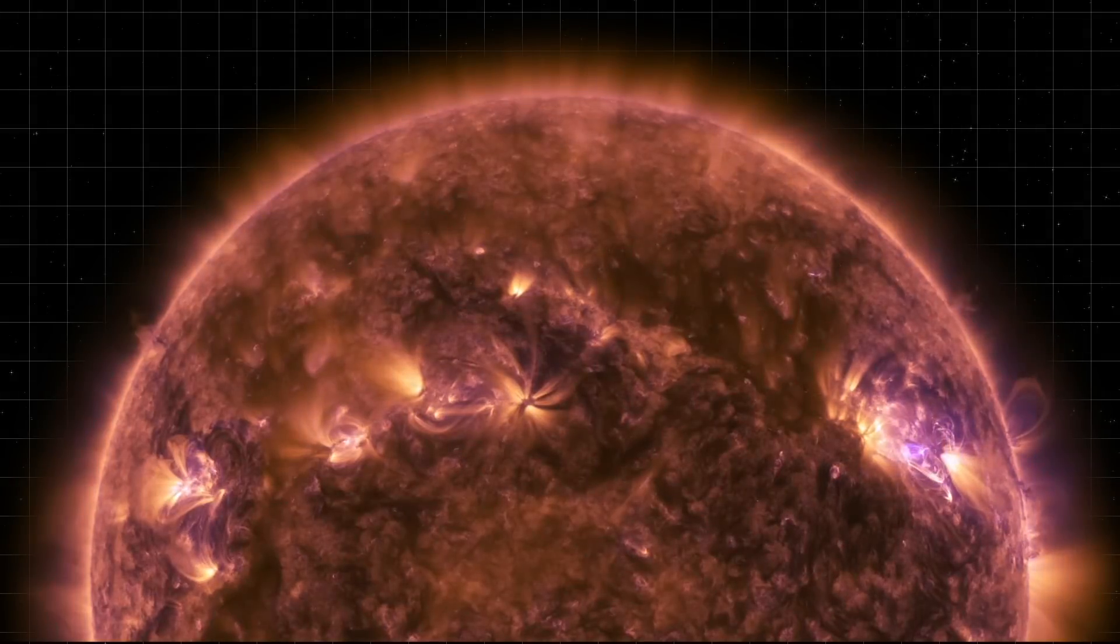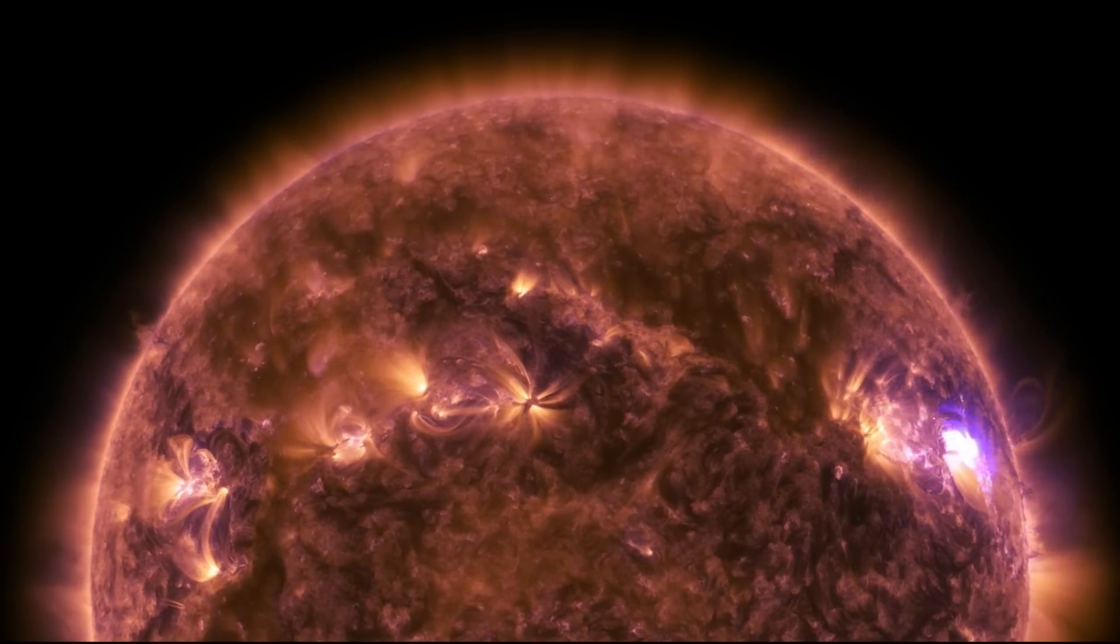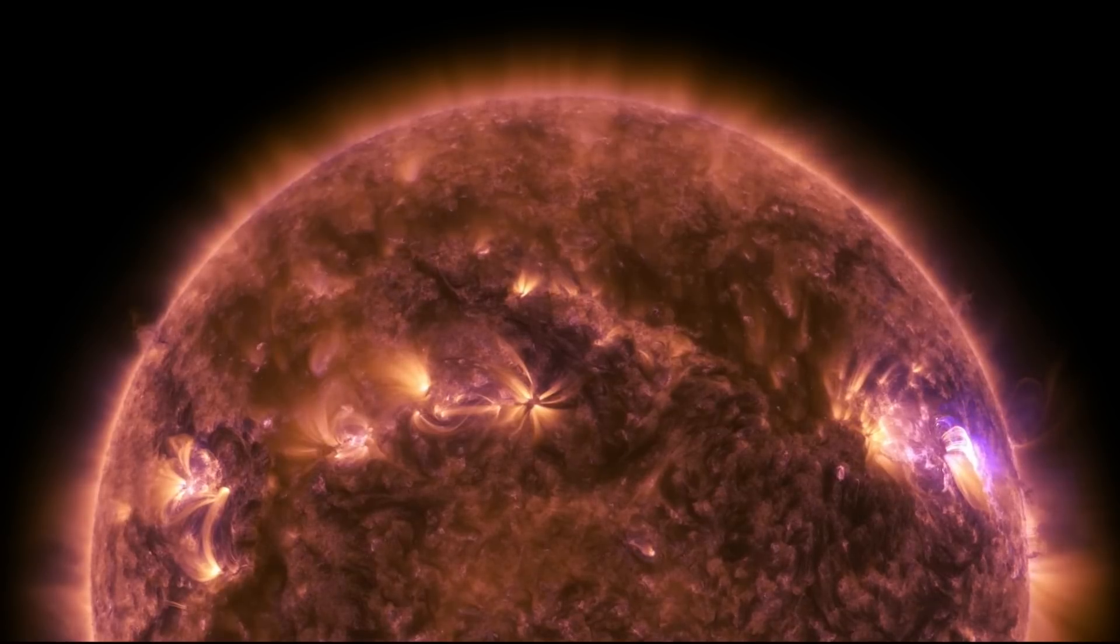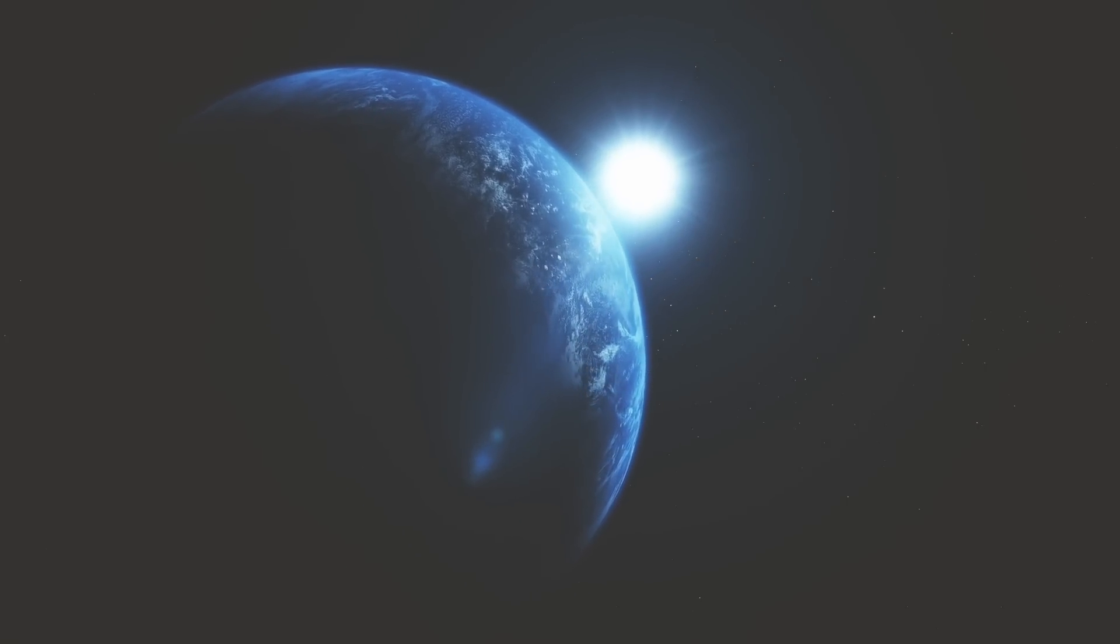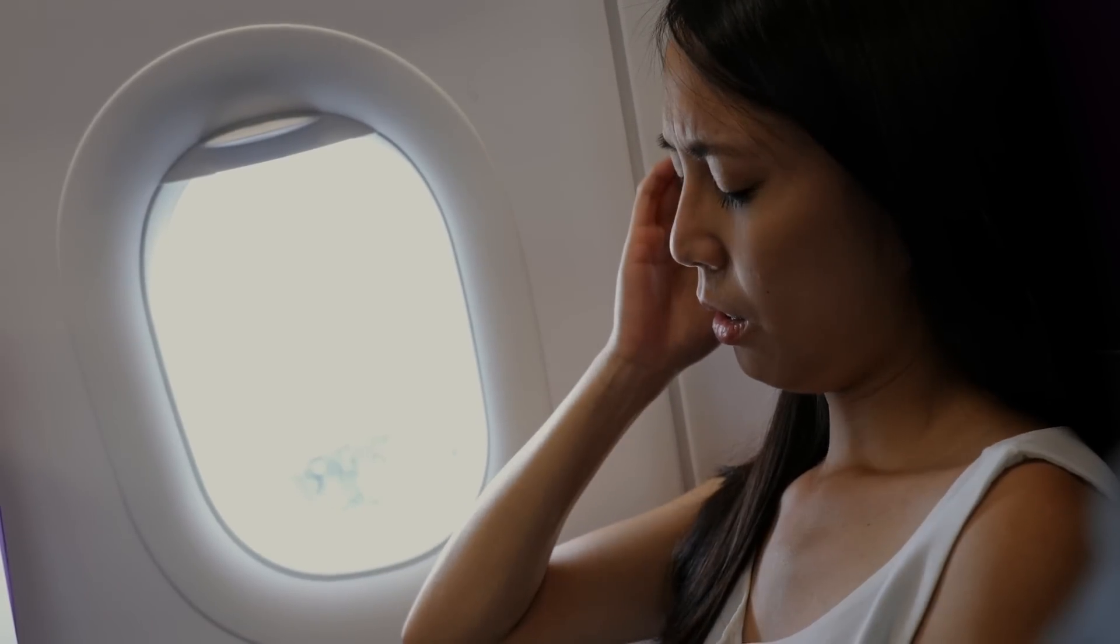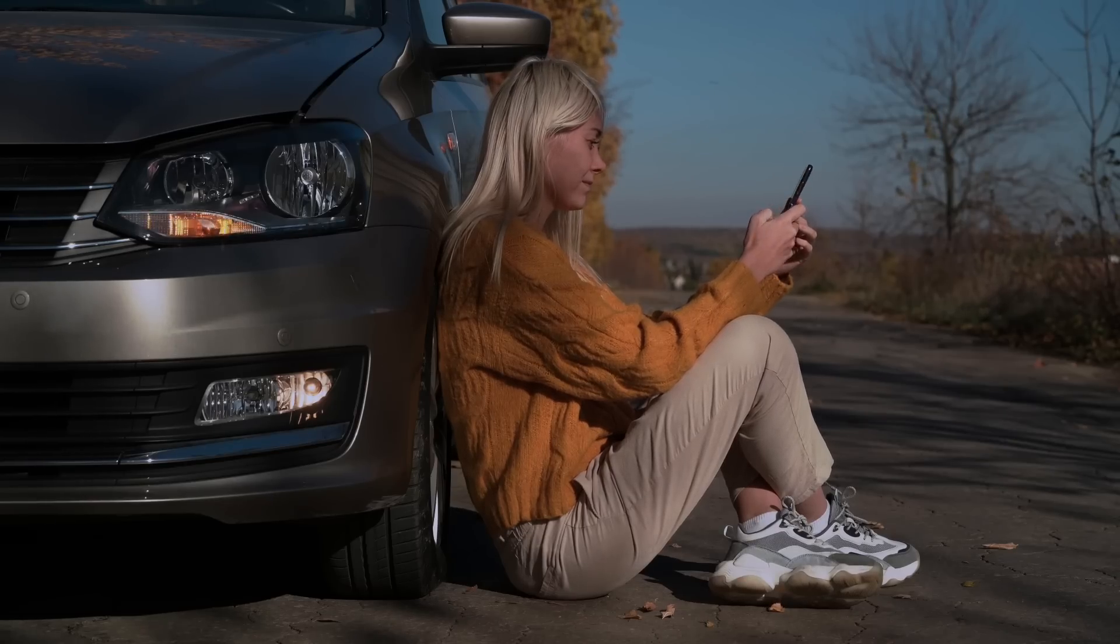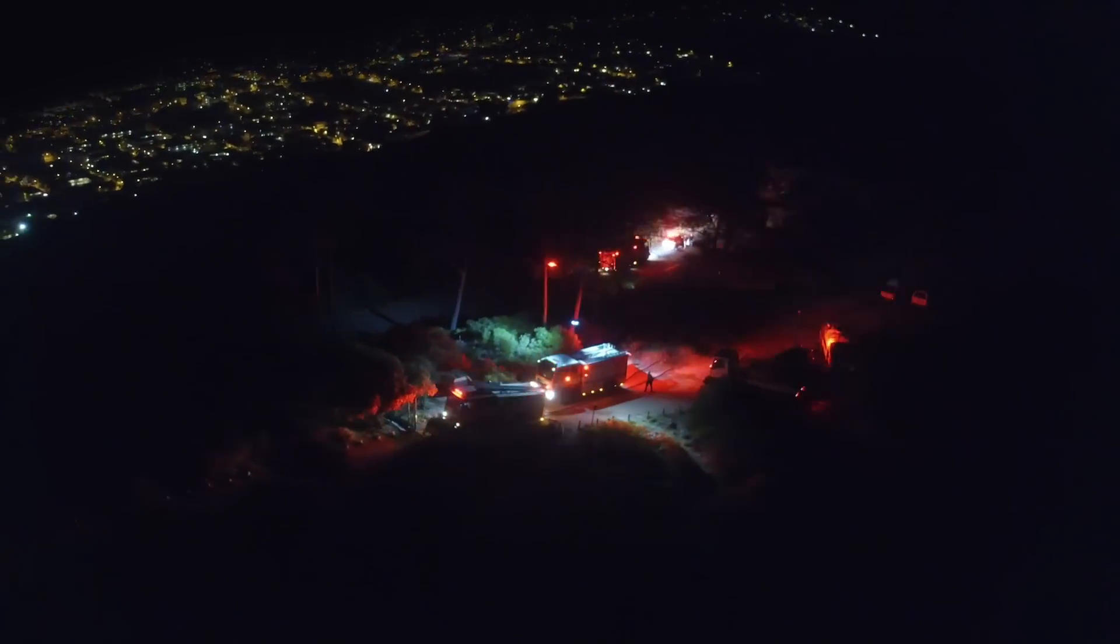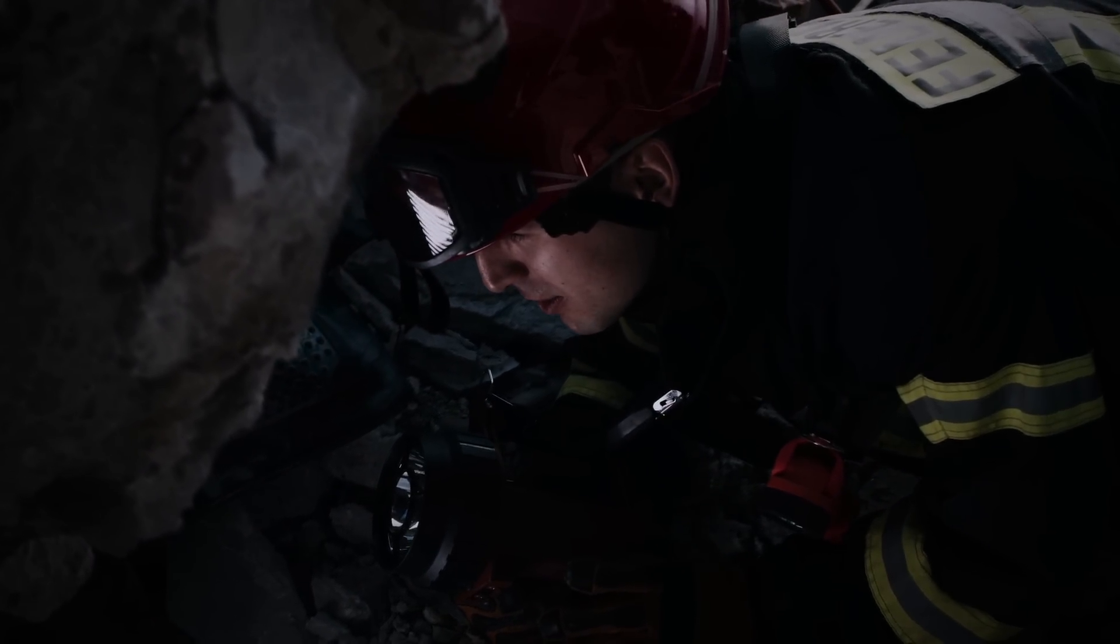The increased radiation from such a solar storm would pose a direct threat to public health, particularly for those on high-altitude flights near the poles. Passengers and crew could be exposed to harmful radiation levels, necessitating emergency rerouting of flights. Emergency services, already strained by power and communication outages, would struggle to respond effectively to the growing crisis, impacting everything from medical care to disaster response.